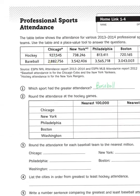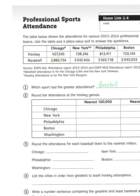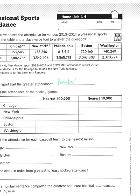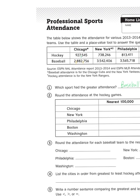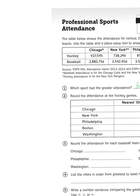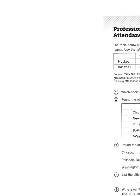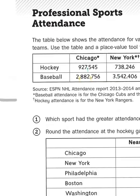Now we're asked to round the attendance of hockey games, but to different place values — nearest 100,000 and nearest 10,000. Let's look at Chicago again. Chicago's hockey attendance was 927,545. It's sometimes useful to round to the nearest 100,000, but sometimes we want an estimate to be a little more specific. Let's start with the 100,000. I'm going to use my roller coaster model. My roller coaster model has a hill, and on both sides of that hill I need to find the groups of 100,000 that the number 927,545 falls between.